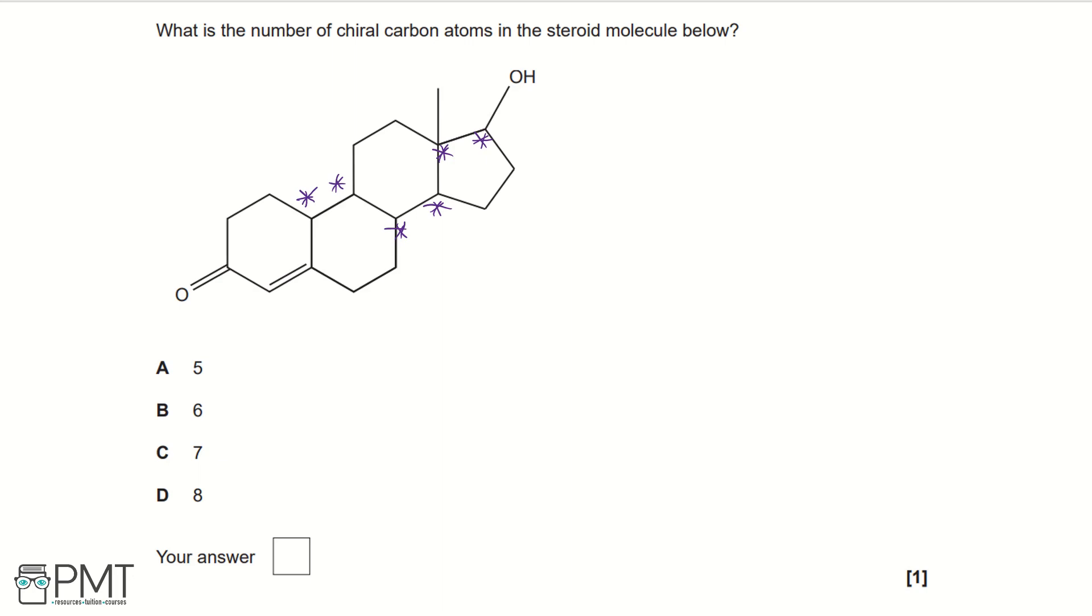So looking at our options, we've given 5, 6, 7 and 8. Counting the number of chiral carbons here, we have 6. So that means our answer would be B.